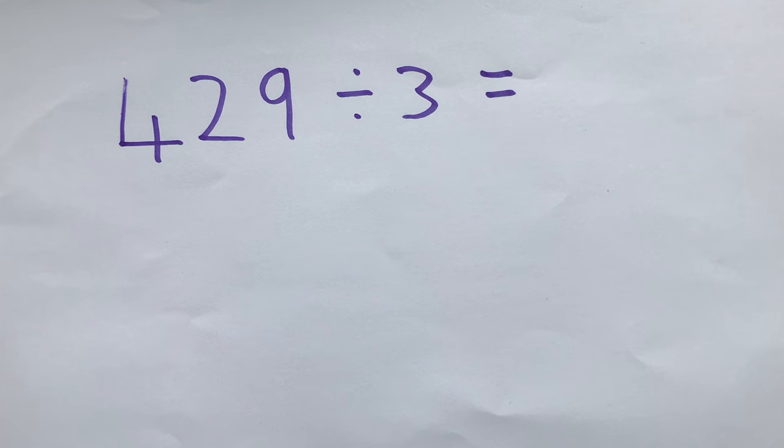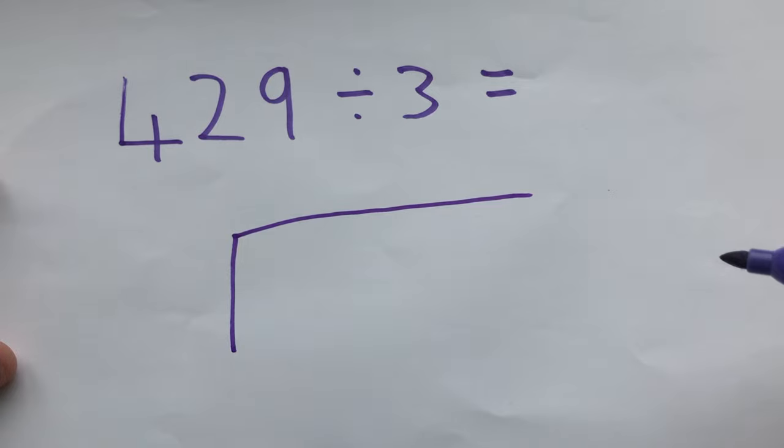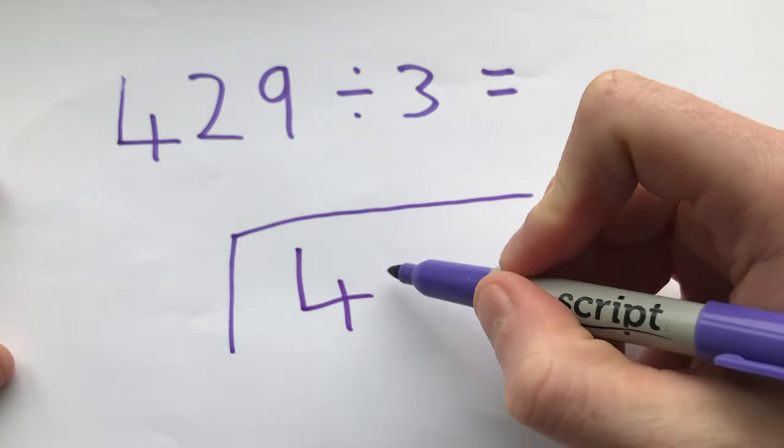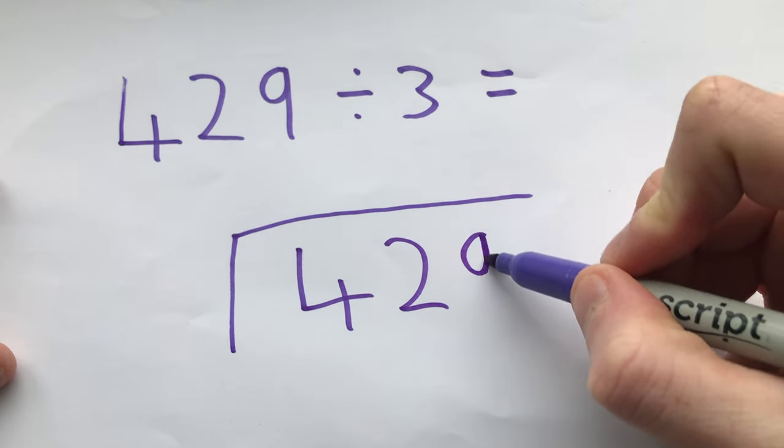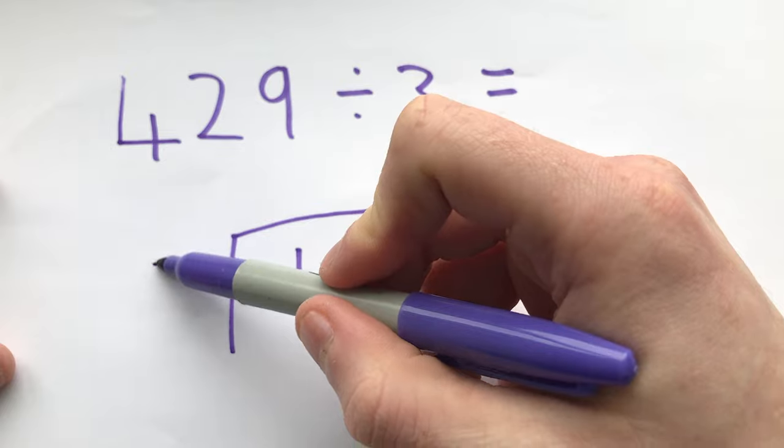In this video I'm going to show you how to use the bus stop method for division. The first thing we need to do is draw our bus stop and the number that we are dividing goes inside the bus stop. The number that we are dividing it by goes outside the bus stop.